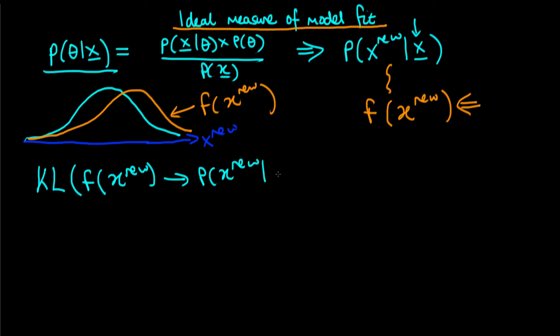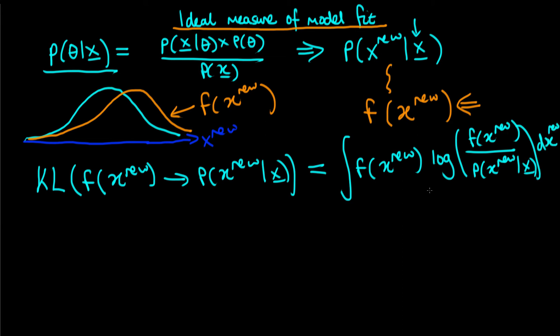And we know that that's just equal to the integral of F of X new times the log of F of X new divided through by P of X new given X. And here we'd be integrating over all possible ranges of X new, but I'm not going to include the integral bounds here because in general that's pretty obvious.